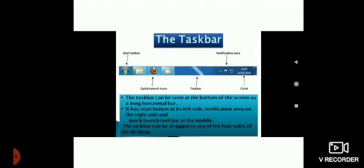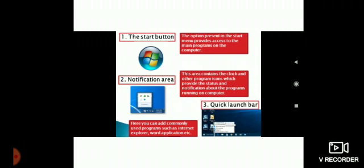Where is the Start button situated? It is situated at the bottom of the screen. The taskbar provides the easiest method to switch between active programs. Whenever we run a program, its button is automatically placed on the taskbar. The Start button is the most used button on the Windows desktop. When we click on the Start button, a menu displaying the major options appears — this menu is known as the Start menu.